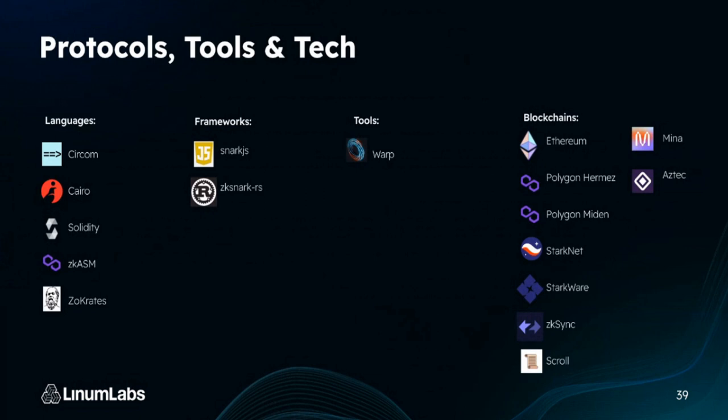There are many blockchains that use zero knowledge. Some notable ones: Ethereum as the layer one for all these rollups; Polygon Hermès, Polygon Miden; StarkNet and StarkWare; ZK-Sync; Scroll — which is really great. The Mina Protocol is its own blockchain, tiny at 256 kilobits, using zero knowledge proofs and written in SnarkyJS. It's a really cool application of zero knowledge. And Aztec is also a great zero knowledge blockchain.